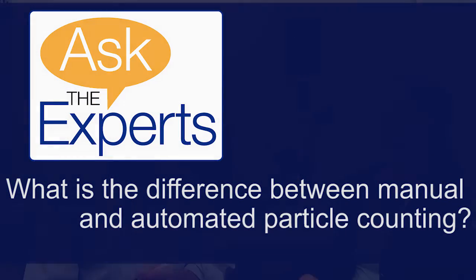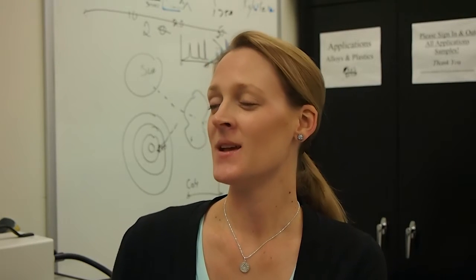Sure, so the two main differences are going to come down to accuracy and reproducibility. The reproducibility is really the key thing that is the difference between manual and automated. Manual, when an operator looks through the eyepieces with a reticle in the eyepiece and doing their own measurements, which might be different from the morning to the afternoon, different operators. An automated system is going to automatically do all the particle counting for you and provide you with the results. So it's taking that operator error out of it.